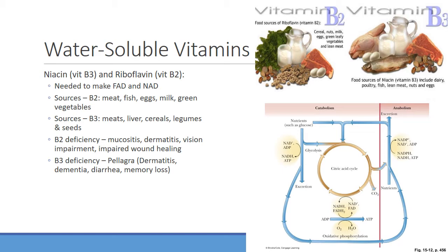With riboflavin (B2) deficiency, you can see skin manifestations like dermatitis, mucositis, impaired wound healing, and vision impairment. With vitamin B3 deficiency, you develop pellagra, which presents with dermatitis, CNS deterioration including dementia and memory loss, and diarrhea. Niacin is also important as a supplement for hyperlipidemia — it can reduce certain blood cholesterol fractions and enhance HDL cholesterol.